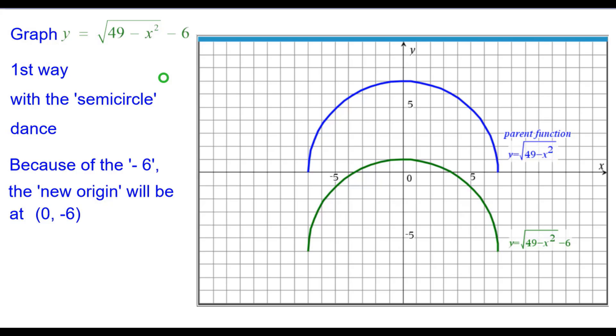We'll compare it to the parent function. And we can see that from the blue to the red, you go down 6. And not only on these three points, but on all the points, down 6.